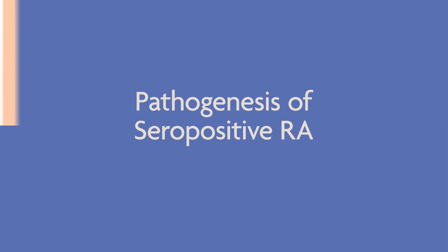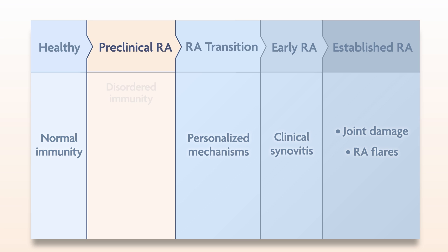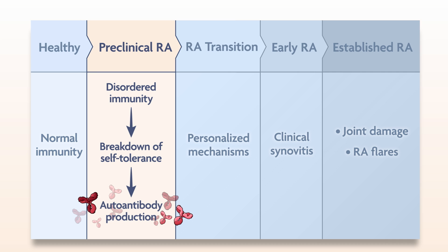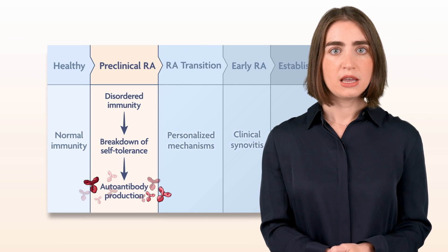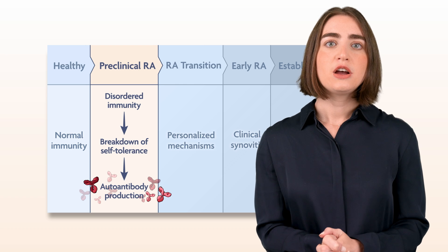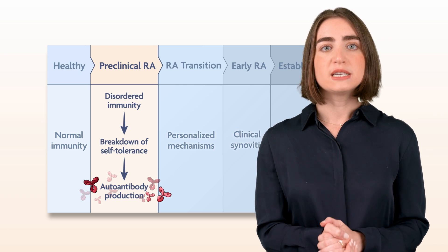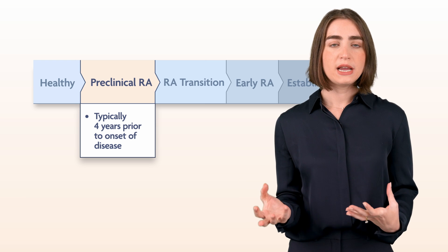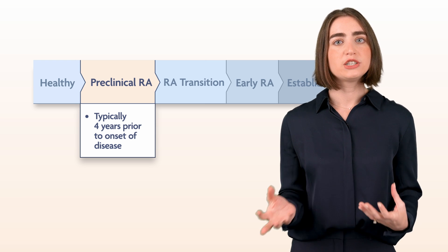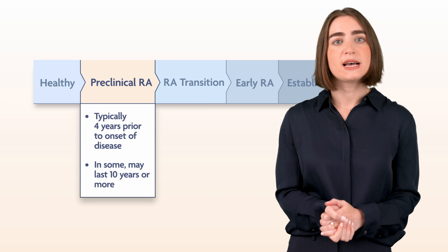The preclinical stages of seropositive rheumatoid arthritis are characterized by disordered immunity, with a breakdown of tolerance and autoantibody production. There is a genetic predisposition in patients with RA, and people who have a first-degree relative with RA are at about a two- to five-fold greater risk of getting the disease. These patients who are genetically predisposed may develop autoantibodies — ACPAs and rheumatoid factors — meaning they are at risk for the disease, but they don't actually have the disease at that point. The mean duration of the preclinical phase is typically about four years prior to the onset of disease, but in some patients this may last 10 years or more.